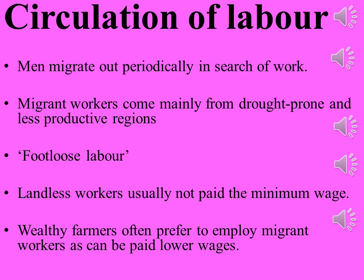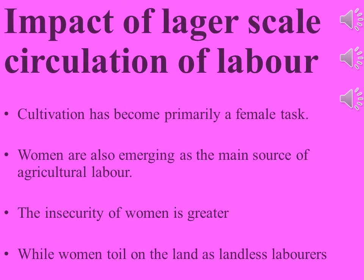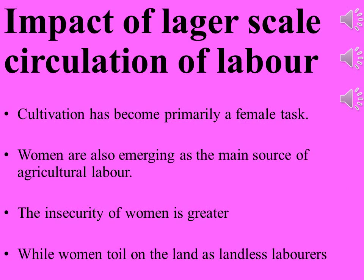It is a strange pattern that in some areas, landless laborers are moving out of their home villages in search of work during peak agricultural seasons. This migration and lack of job security have created poor working conditions and living conditions for these workers. The large-scale circulation of labor has had several effects on rural society. In poor areas where male family members spend much of their time working outside the village, cultivation has become a female task — though women earn lower wages than men for similar work.